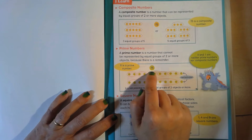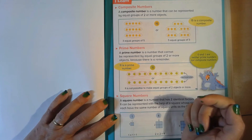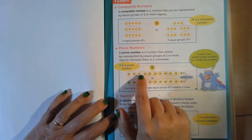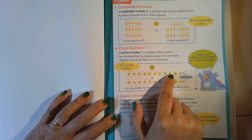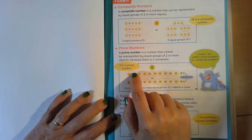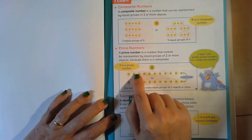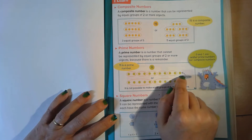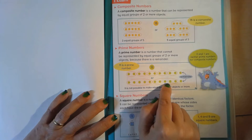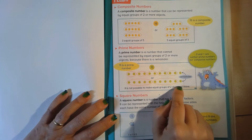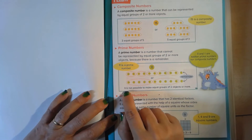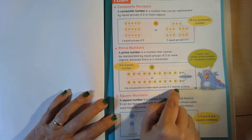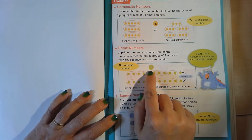So let's look at the number 11. If I was to divide the number 11 into five groups, we could have two, two, four, six, eight, ten — but then there would be a remainder. If I had two groups of five, there would also be a remainder. So it is not possible to make equal groups of two objects or more with the number 11.